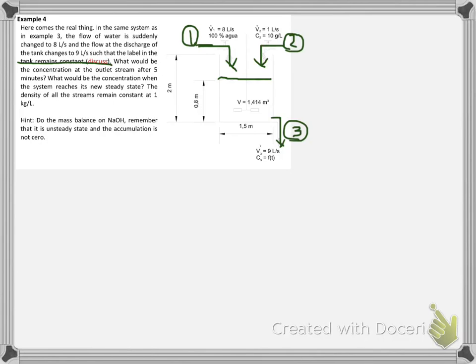What would be the concentration at the outlet stream after 5 minutes? What would be the concentration when the system reaches its new steady state? The density of all the streams remains constant at 1 kilogram per liter.